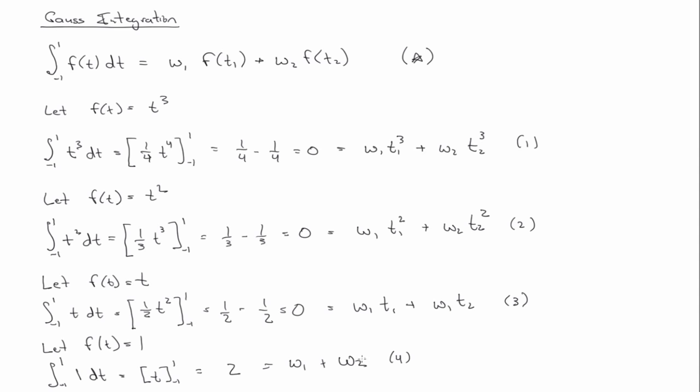So we have four equations. We have four unknowns: W1, w2, t1, and t2. So we want to solve 1 to 4 for w1, w2, t1, and t2. And if we do that, what we end up with is that w1 and w2 equal to 1, and t1 equals to t2 equals to the square root of 1 third.